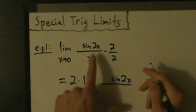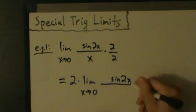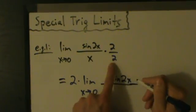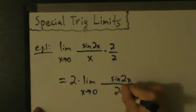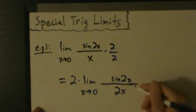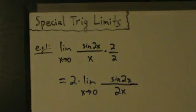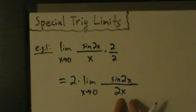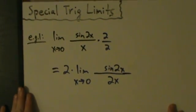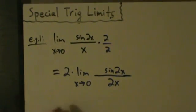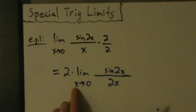The 2x in the sine stays as is. The 2 on the bottom combines with the x to give 2x in the denominator. So now we have the limit approaching 0, with sine of 2x over 2x — we're almost there. To use the special trig limit, we need the limit variable to match the argument, and that's exactly what's happening.